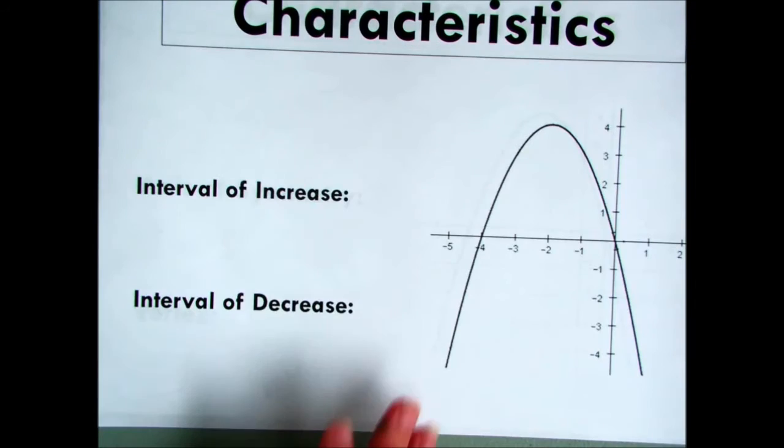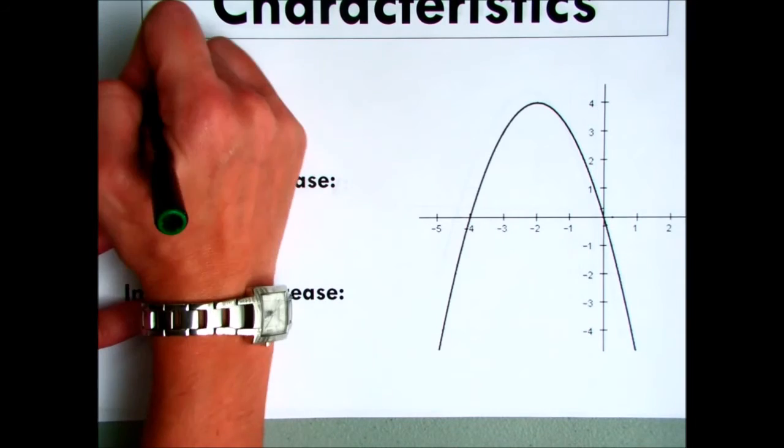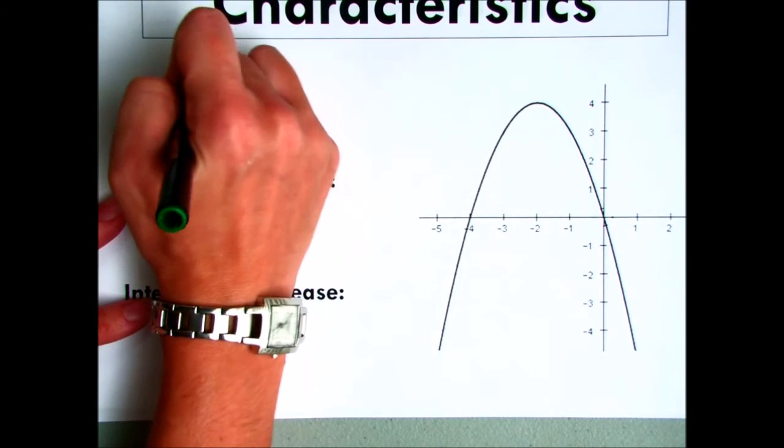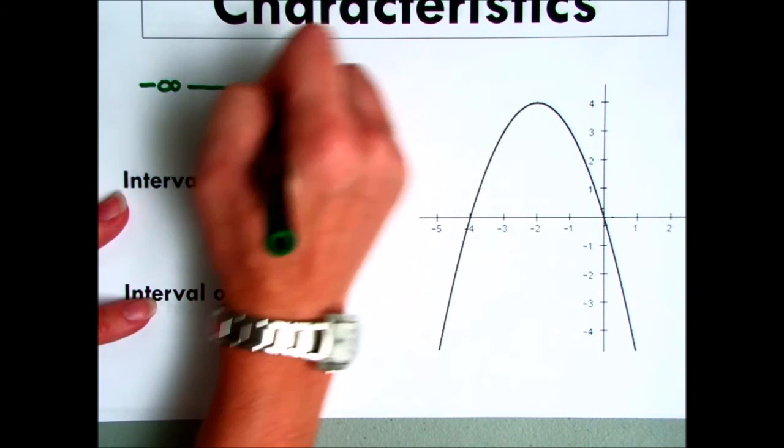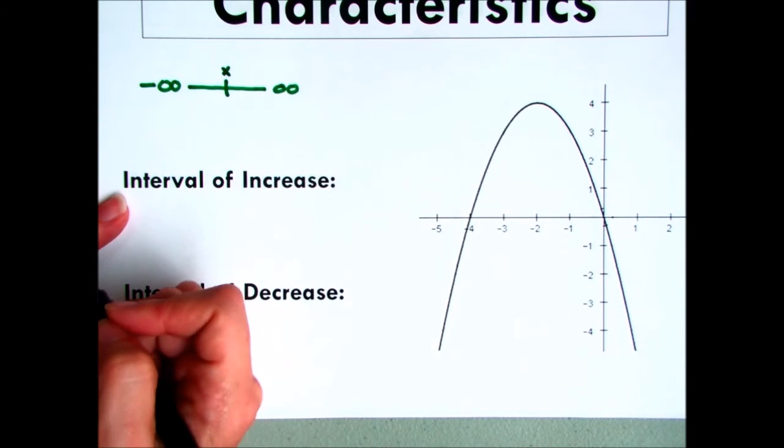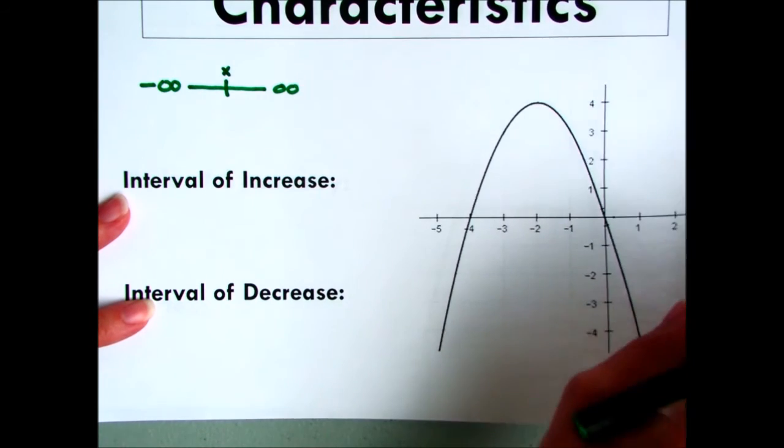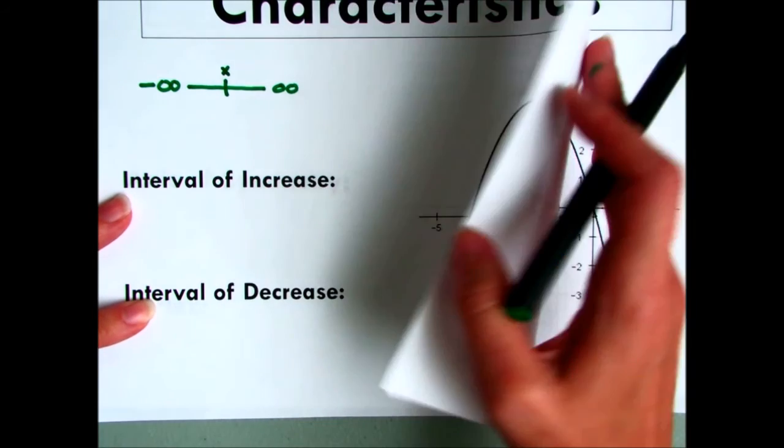The next characteristic of the function could be intervals of increase and decrease. Now in class, I told you to go ahead and put your negative infinity with a line to positive infinity and put a breaking point in the middle. We know that this is relating to the x. So look at where we can fold this piece of paper. Now you can actually fold the paper so that the parabola is in half.